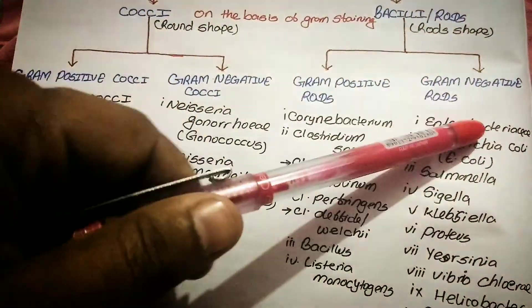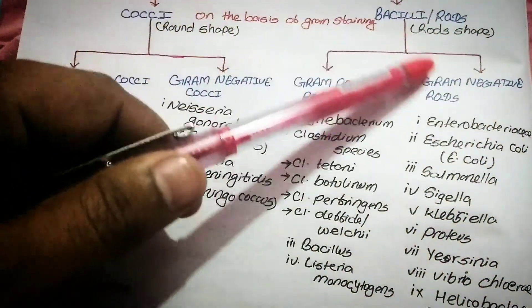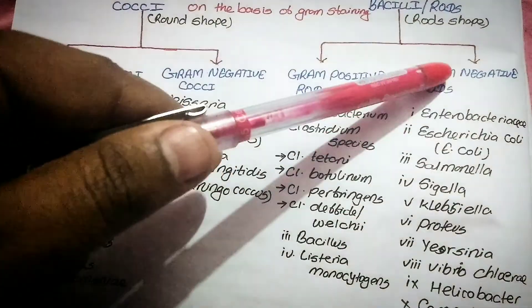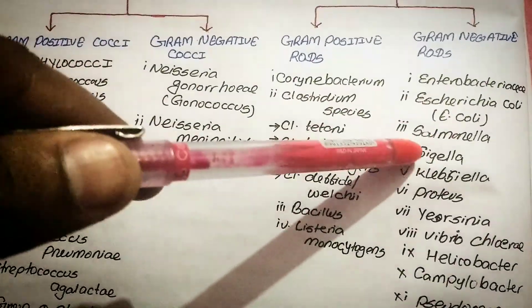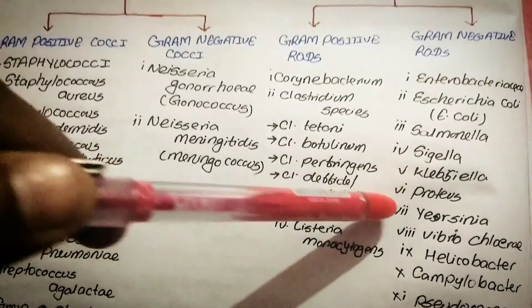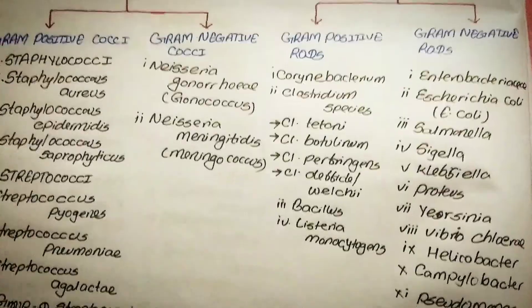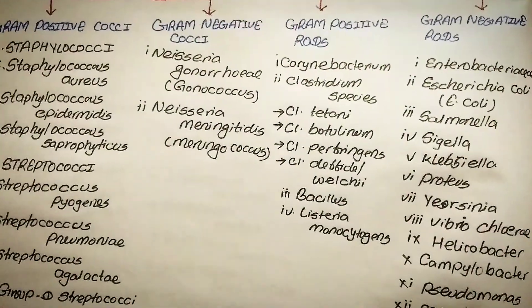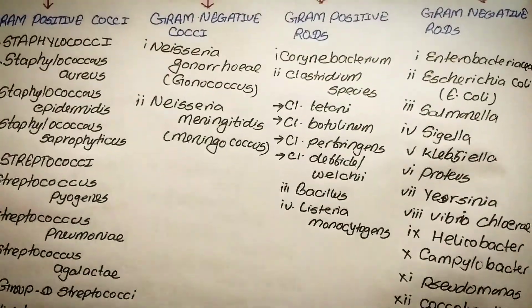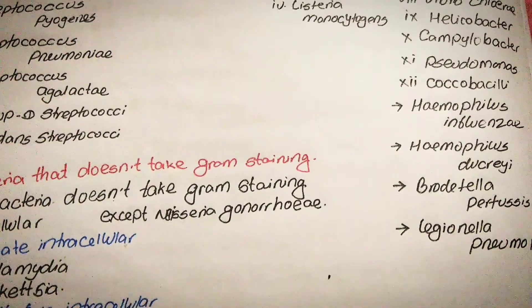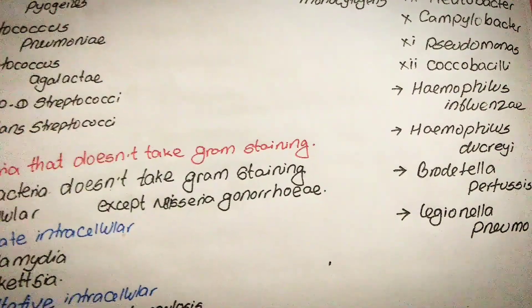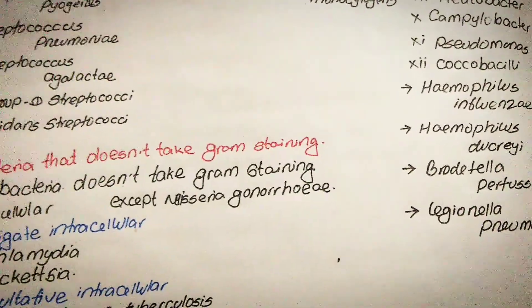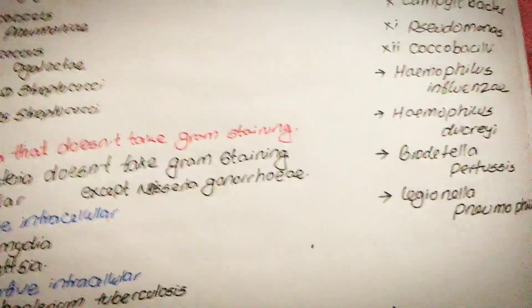Gram-negative bacilli or rods include: Enterobacteriaceae — Escherichia coli, Salmonella, Shigella, Klebsiella, Proteus — Vibrio cholerae, Helicobacter, Campylobacter, Pseudomonas, Coccobacilli — Haemophilus influenzae, Haemophilus ducreyi, Bordetella pertussis, and Legionella pneumophila. There are a lot of species inside the gram-negative rods.